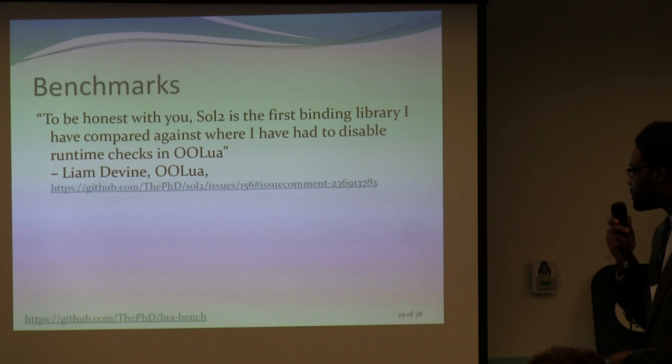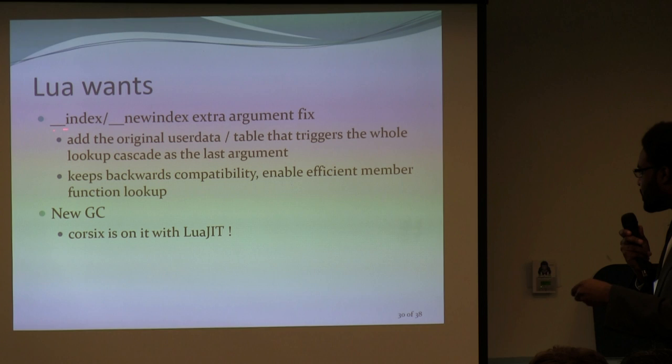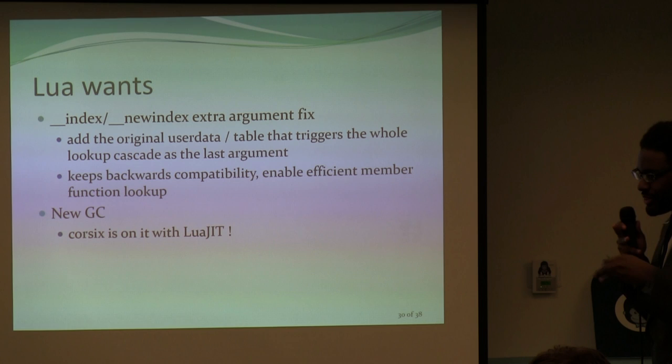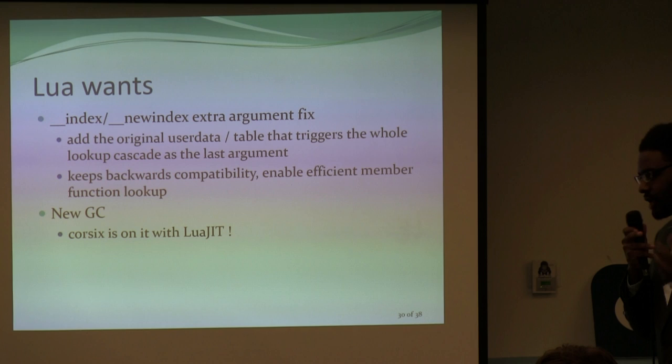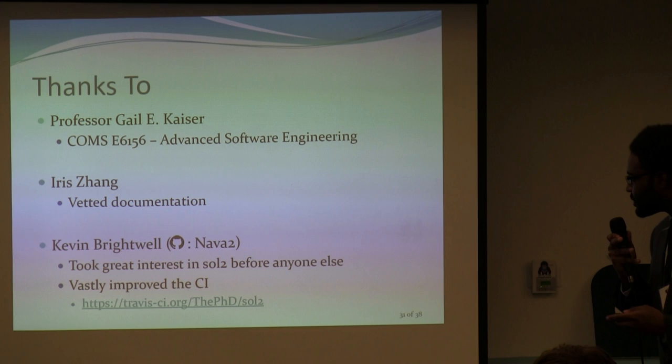To fix the __index/__newindex issue that affects variable table access, my tentative suggestion — without knowing much about the Lua implementation — is to add the original userdata or table that triggers the whole lookup cascade as an extra argument at the very end. This way it maintains backwards compatibility and would enable competitive performance in Lua 5.4 or later.